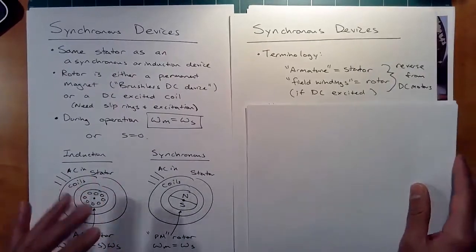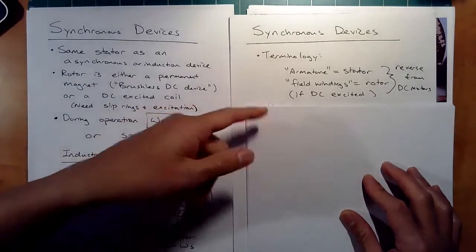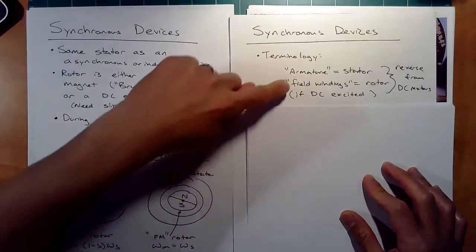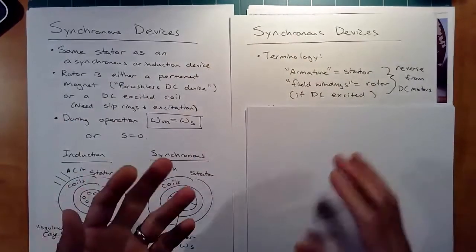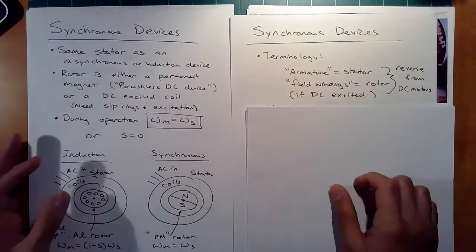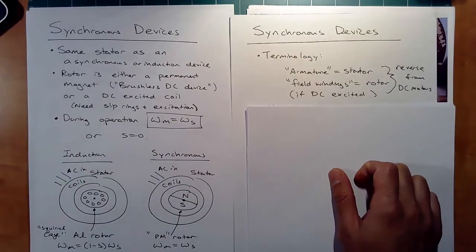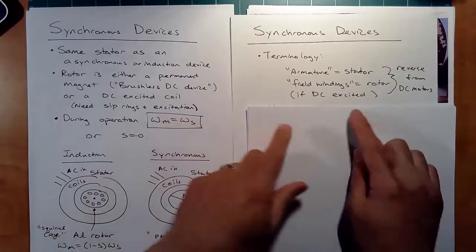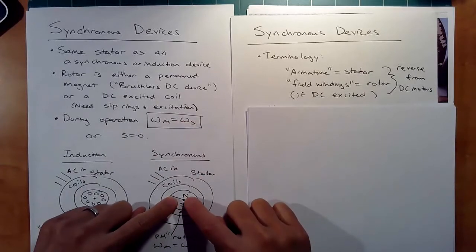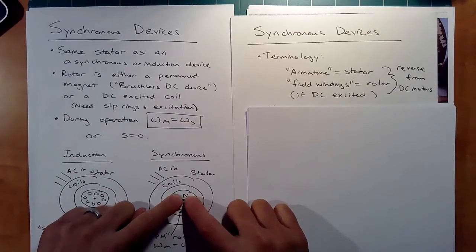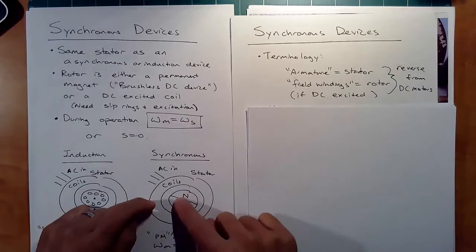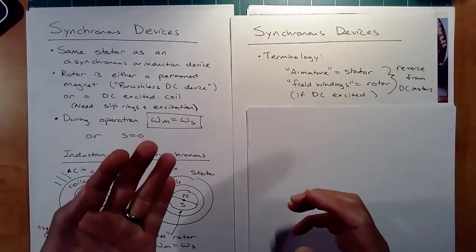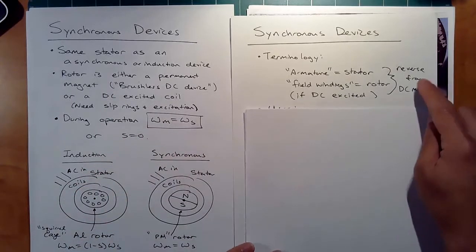Some terminology: the armature is actually the stator, and the field windings are the rotor. That makes sense from our DC motor discussion, where the field windings create the magnetic field. If you have slip rings exciting the rotor as an electromagnet, those are called the field windings, while the stator coils are the armature coils — similar to a brushed DC motor.